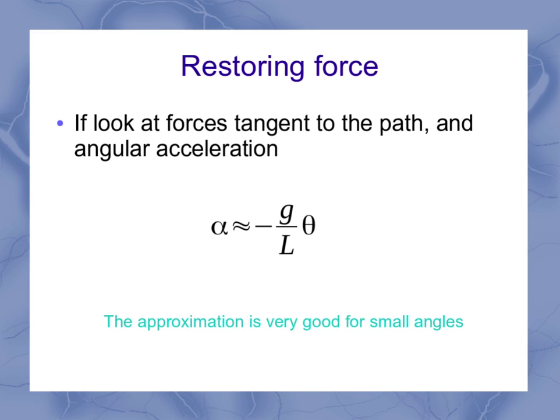Now, this approximation here is a pretty good approximation for small angles. That's why our simple pendulum had to have a small amplitude. And by small angles, we really mean something which is less than about 0.2 radians, which is about 10 degrees, just to give you a feel for that.